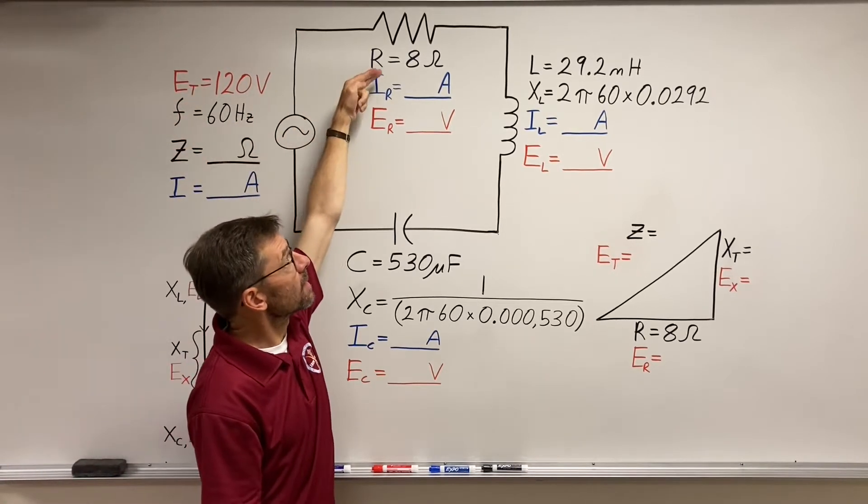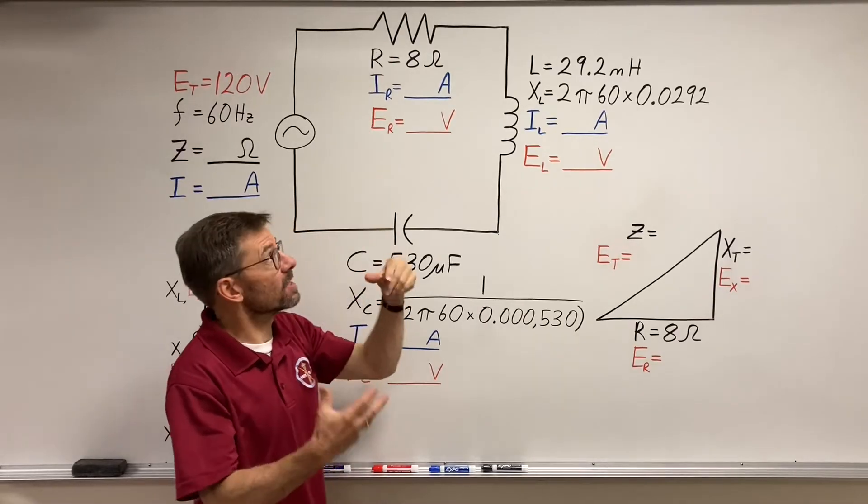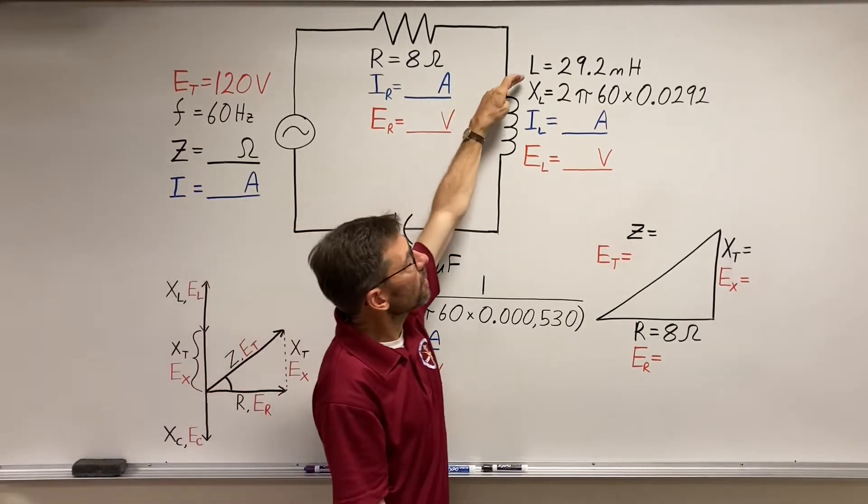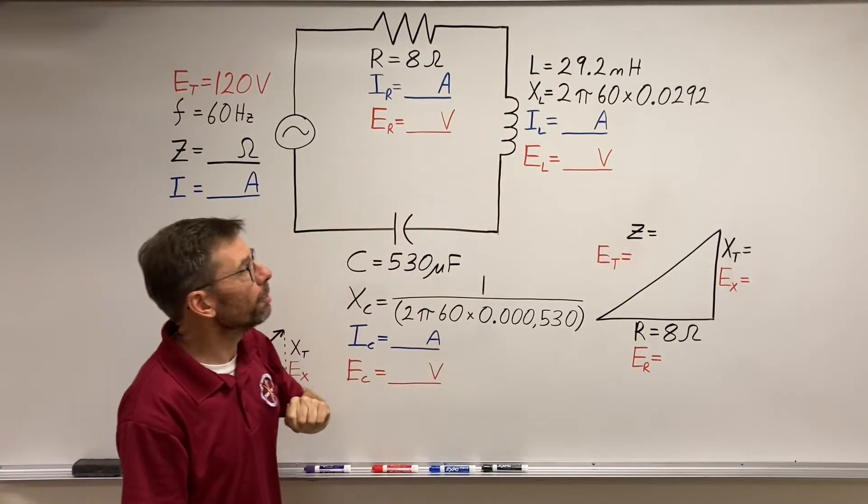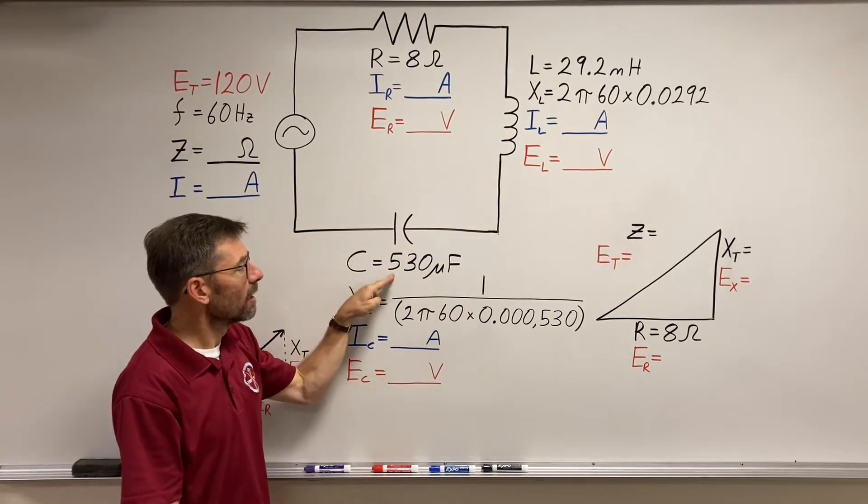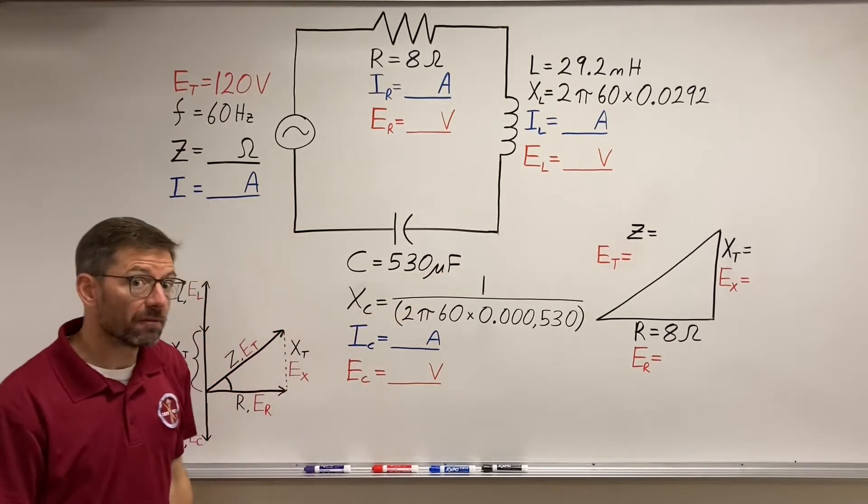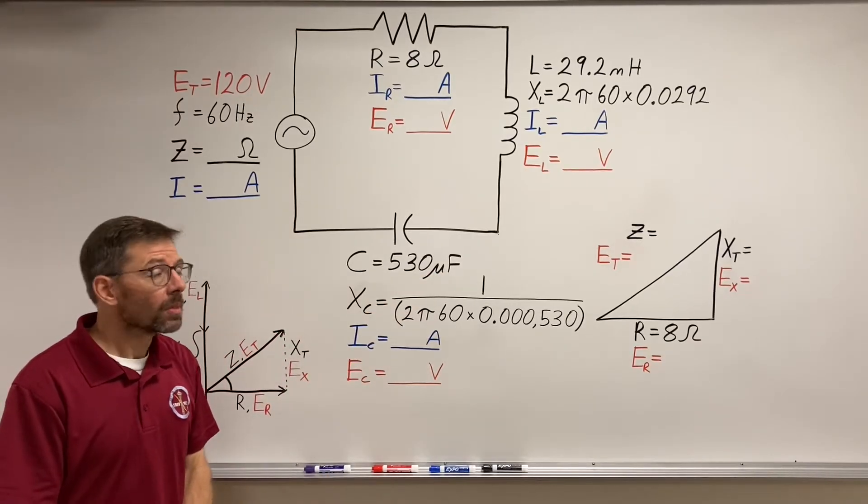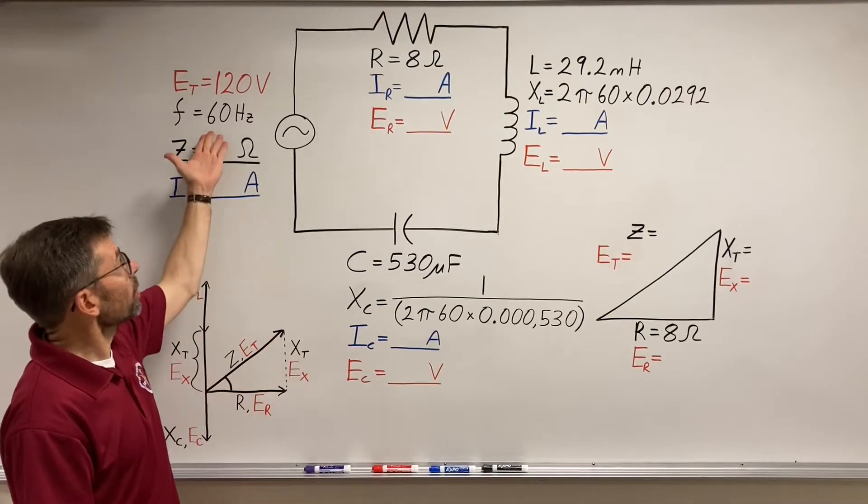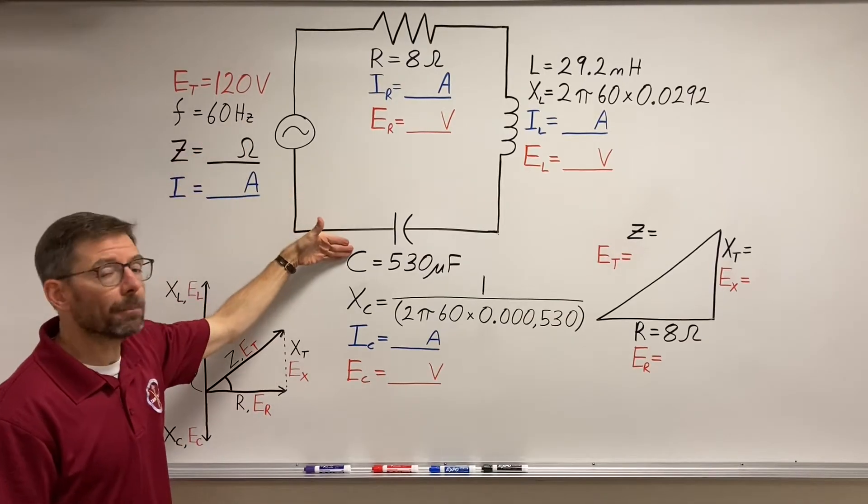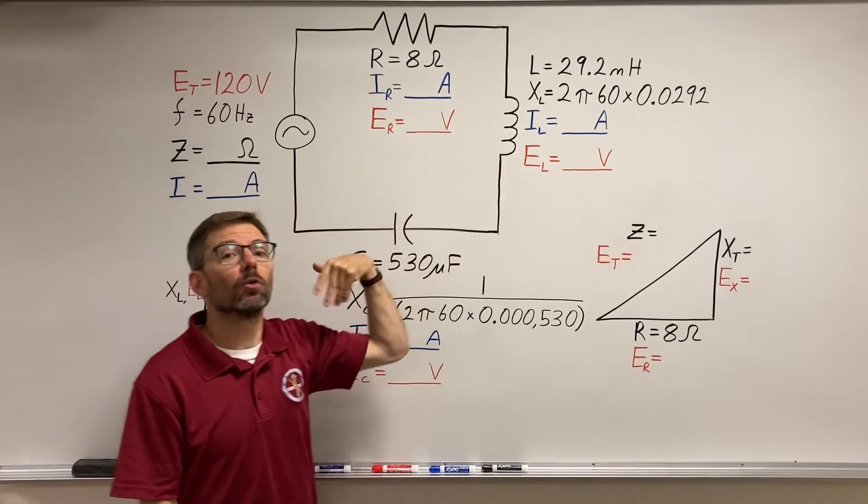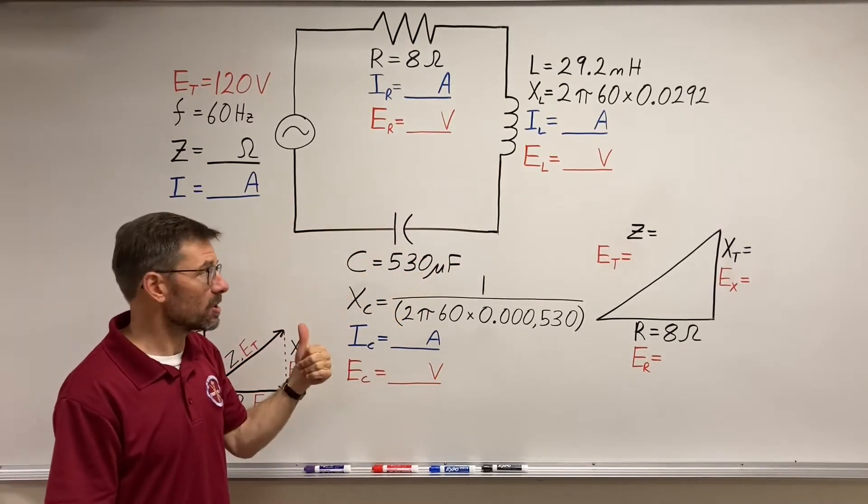I got a resistance - you buy your resistors with a resistance, so 8 ohms. The inductor, 29.2 millihenries, and the capacitor, 530 microfarads. So first step, as we're used to, is to look at the frequency and say, how is my capacitor and how is my inductor going to react to that frequency?